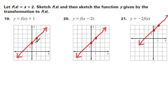So in the first example, when I graph my original function f of x equals x plus 2, I end up with this red line where the y-intercept is 2 and the slope is 1.